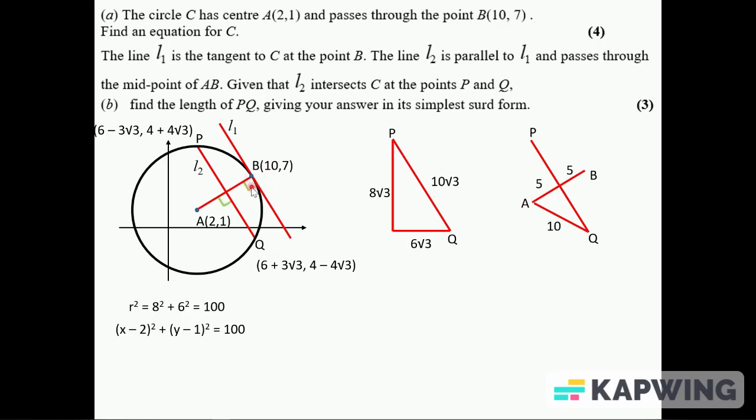Now L1 is a tangent, so that's a right angle there, which means this is a right angle because these two lines were parallel. So there's a right angle there, so we can use Pythagoras on this triangle. And that's half of PQ. So half PQ squared is going to be the 10 squared minus the 5 squared, which is 75. So half PQ is √75, which is 5√3. So PQ is 10√3.